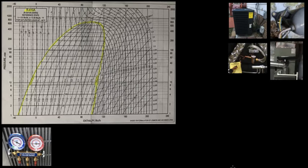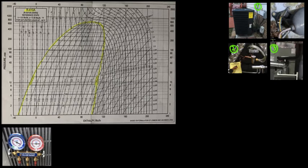As we saw in another video on the refrigeration cycle, we have four components. Number one is the condenser. Component number two is the TXV or the metering device. Component number three is the coil or the evaporator. And component number four is the compressor. The compressor is going to be inside the condenser unit, and the TXV is going to be inside the coil or the evaporator.